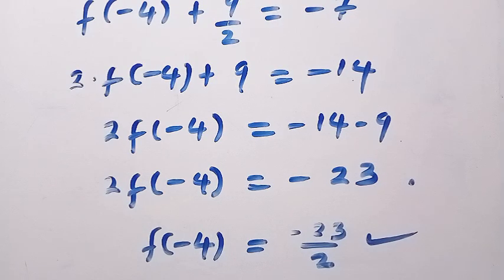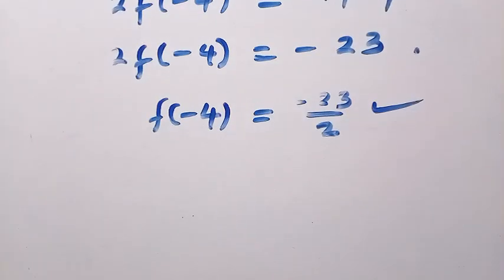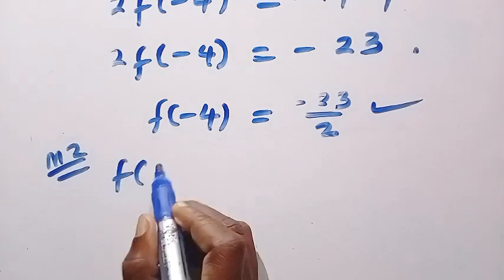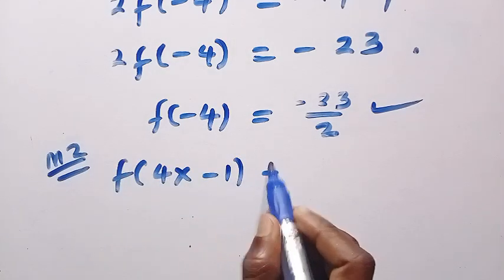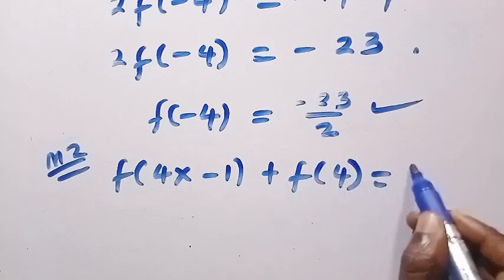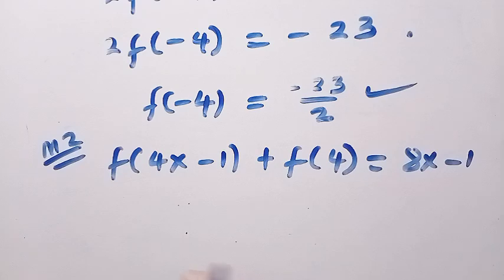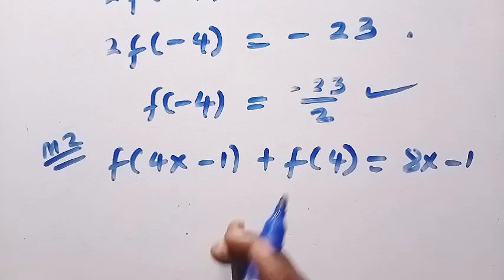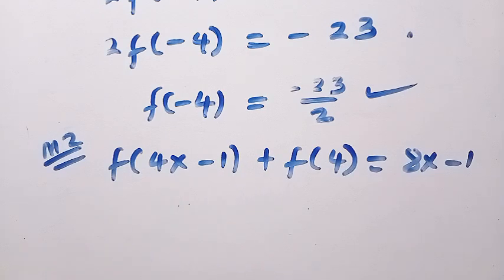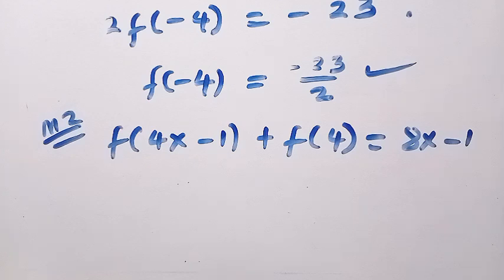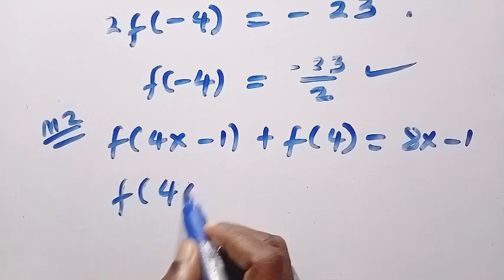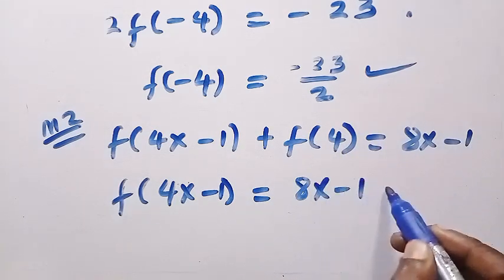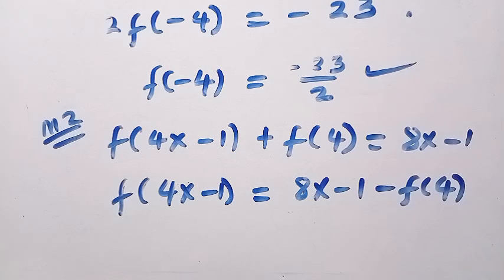Now consider this as Method 2. If we have f of 4x minus 1 plus f of 4 equals 8x minus 1, and we want to find f of minus 4. Suppose we rearrange so that f of 4x minus 1 equals 8x minus 1 minus f of 4. So let's make x the subject of the formula by replacing the argument of the function with t.